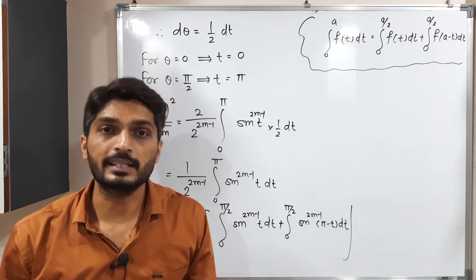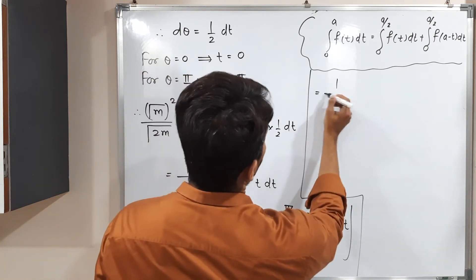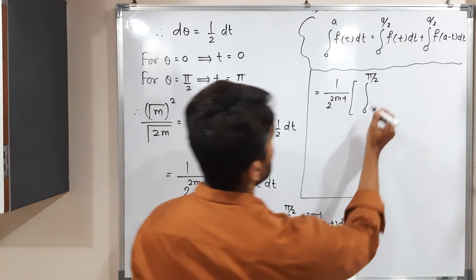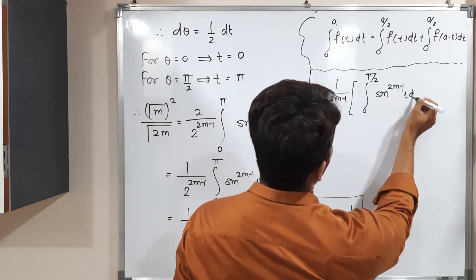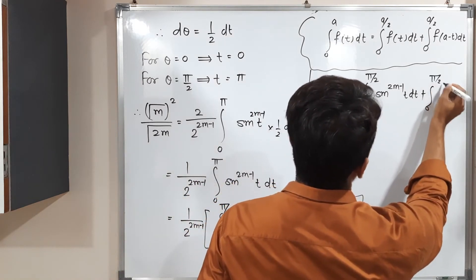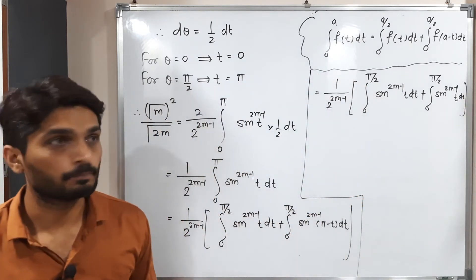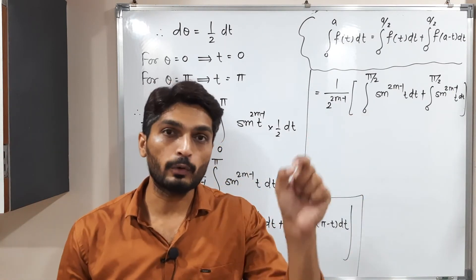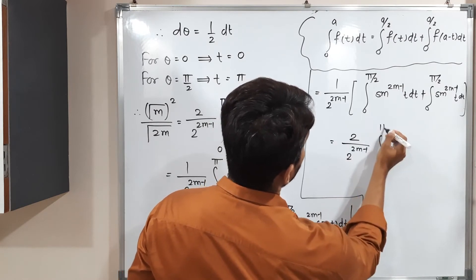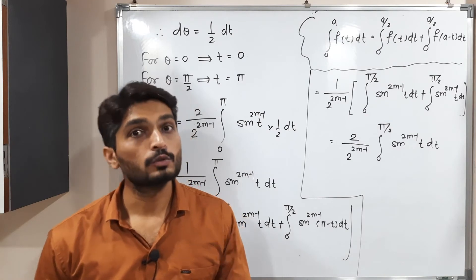Now, sin(π − t) = sin(t), so both integrals are identical. Adding them: 1 / 2^(2m−1) times 2 ∫₀^(π/2) sin^(2m−1)(t) dt.